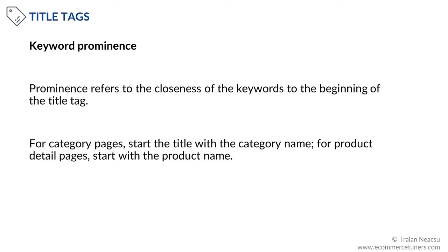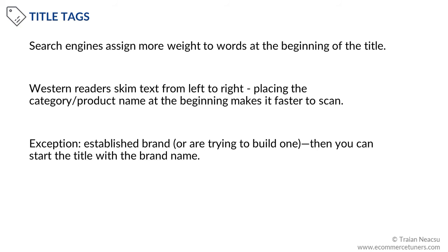Keyword prominence. The term prominence refers to the closeness of the keywords to the beginning of the title tag. On category pages, start the title with the category name; on product detail pages, start with the product name. Search engines assign more weight to words at the beginning of the title. Western readers skim text from left to right, and it is important to reassure them that the page is relevant by placing the category or product name at the beginning.